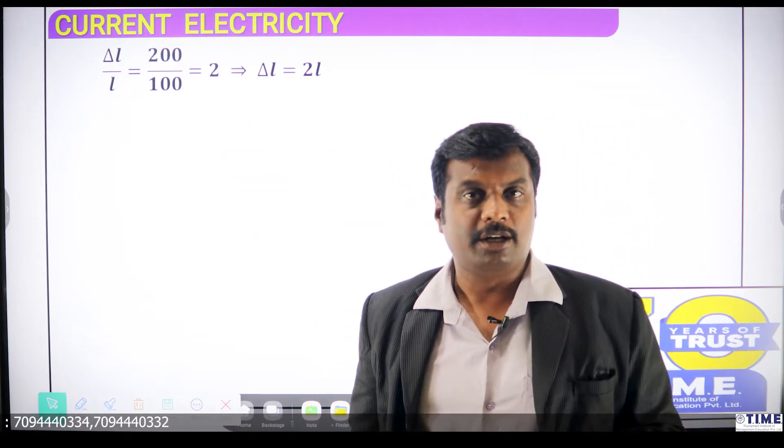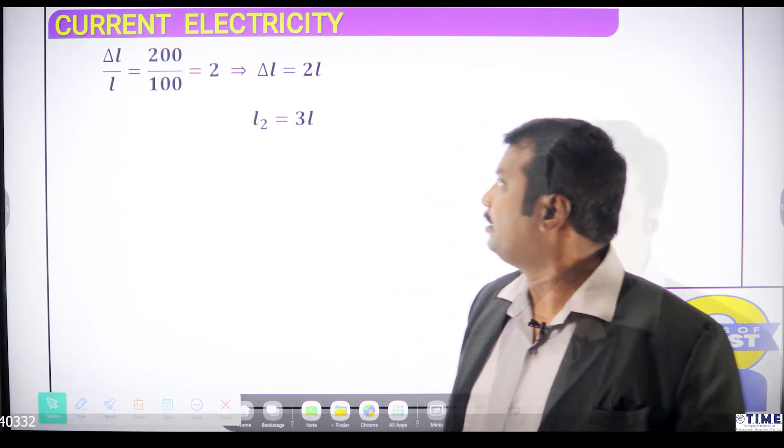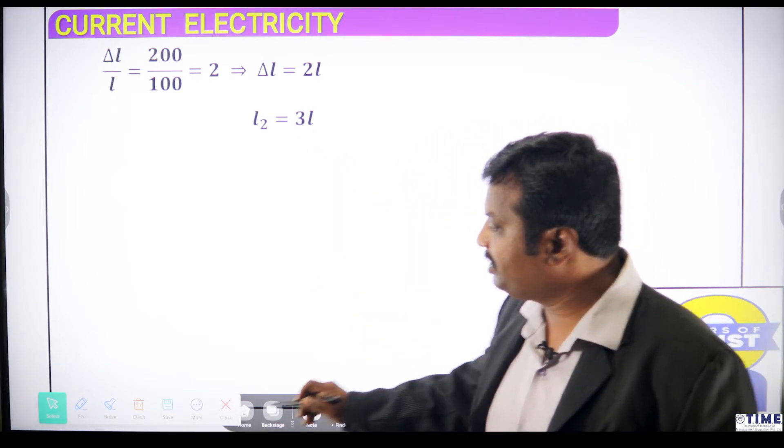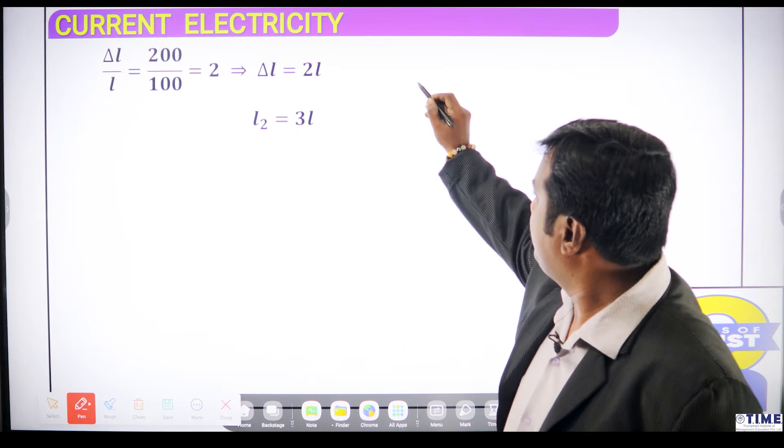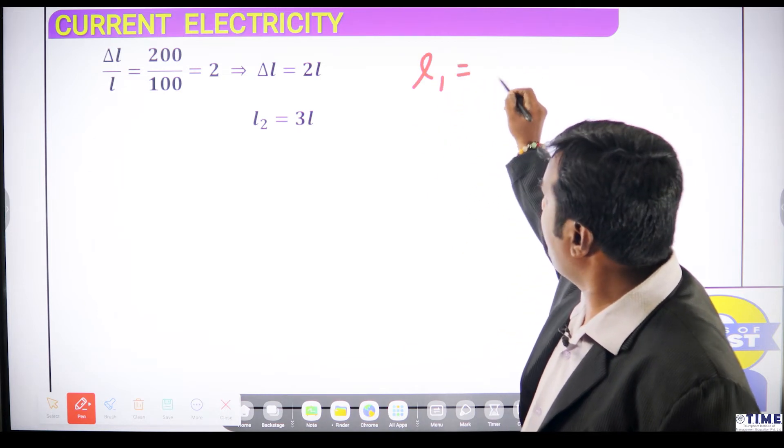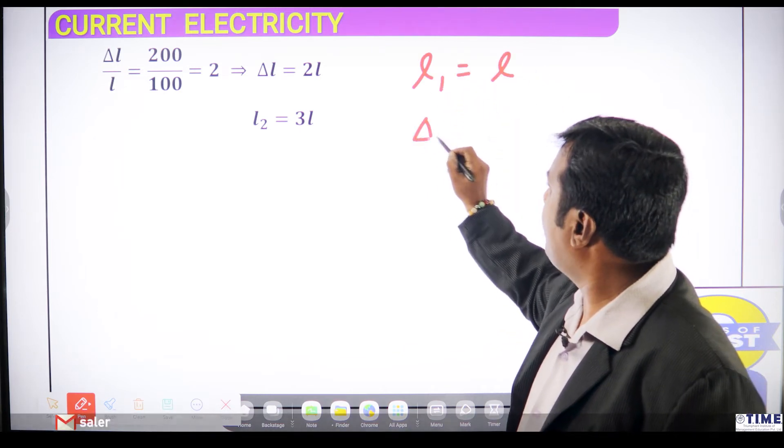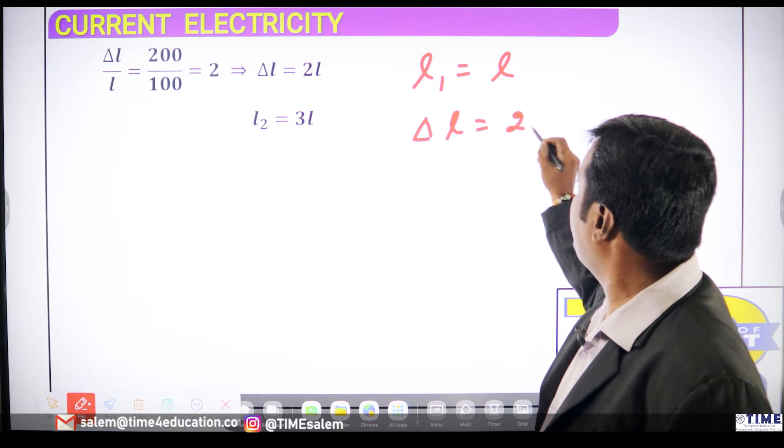Change in length 2L. What will be the original length? Let us assume the original length as L1. Del L, that is the difference in length as 2L.